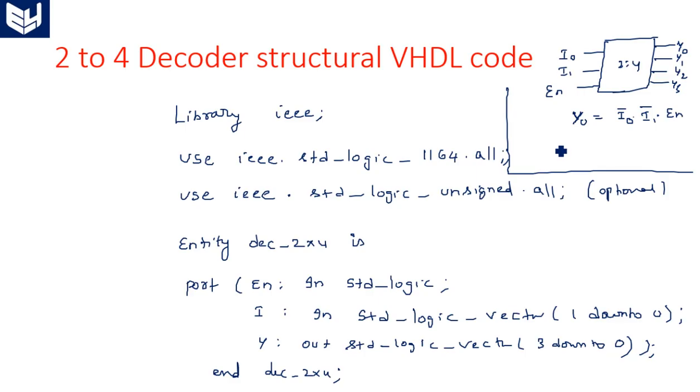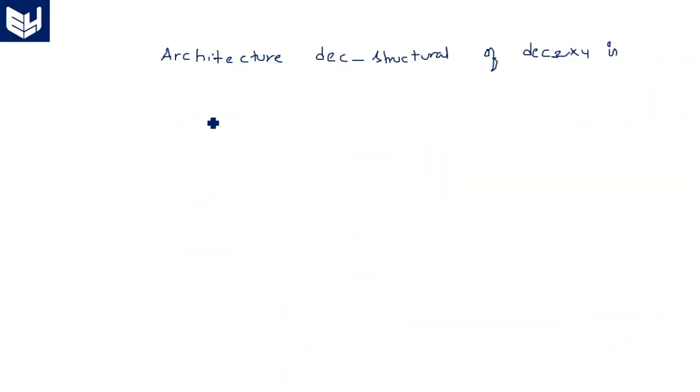Similarly, Y1 is equal to I0, I1 bar, enable. Y2 is equal to I0 bar, I1, enable. Y3 is equal to I0, I1, enable. We are going to get this type of expression from the gating method. For these operations, which gates do we need? NOT gate we need as well as AND gate. For that, we have to consider the components AND gate as well as NOT gate.